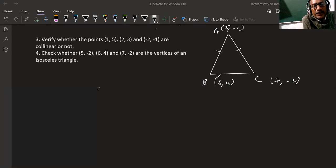AB distance, BC distance, AC distance. So if any two are equal, then these are vertices of an isosceles triangle. So now coming to AB.